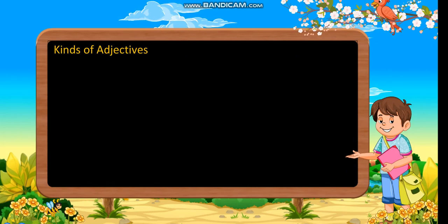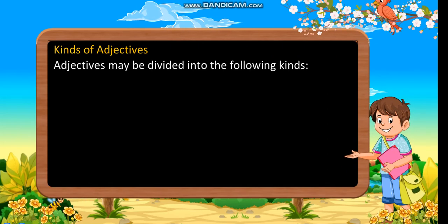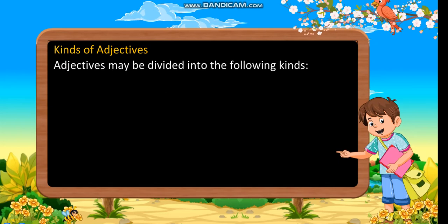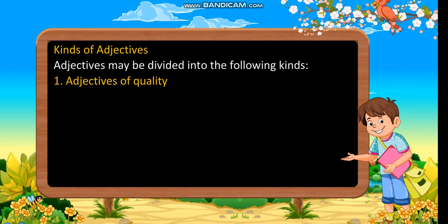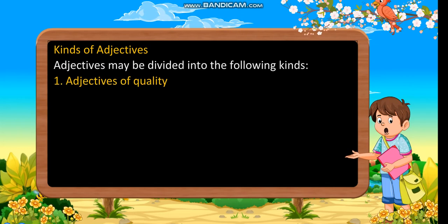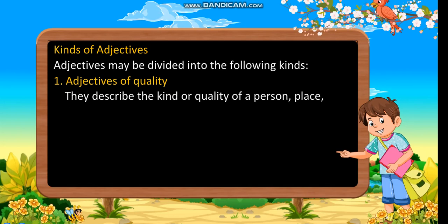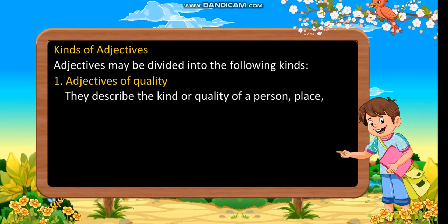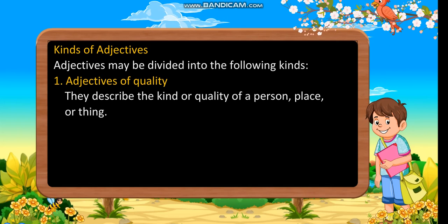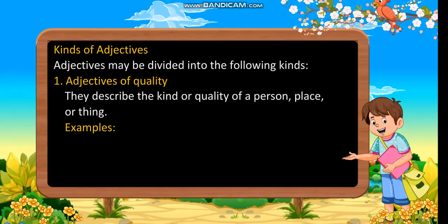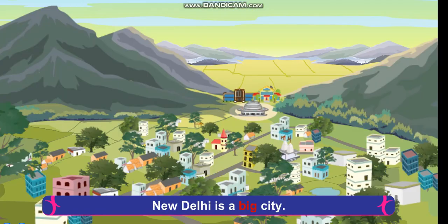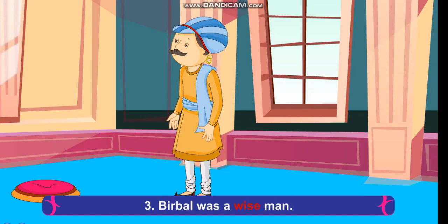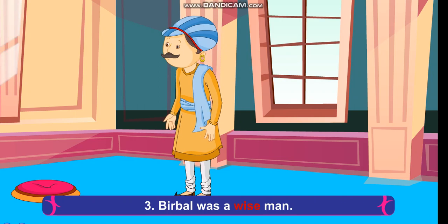Kinds of adjectives. Adjectives may be divided into the following kinds. Adjectives of quality: they describe the kind or quality of a person, place or thing. Examples: A mango is a sweet fruit. New Delhi is a big city. Birbal was a wise man.